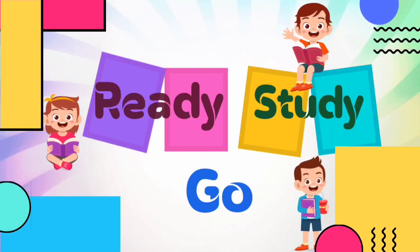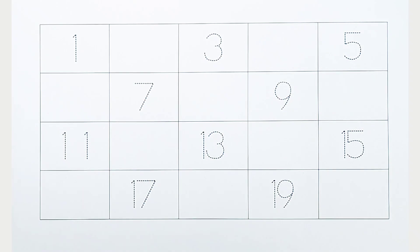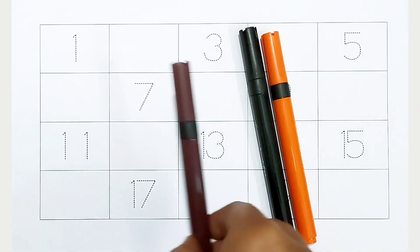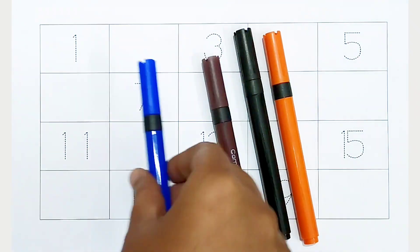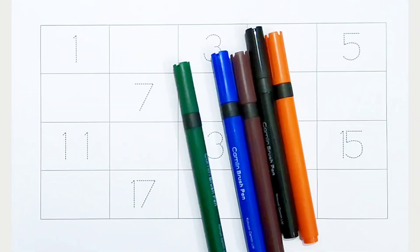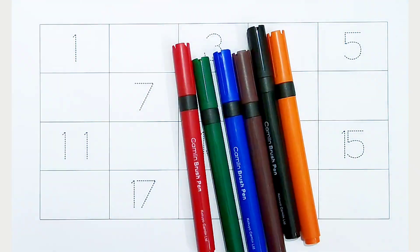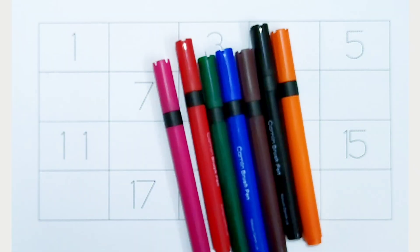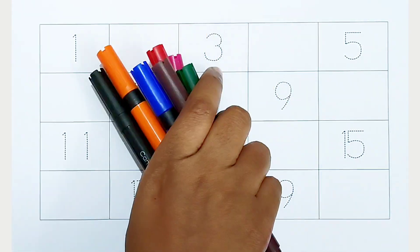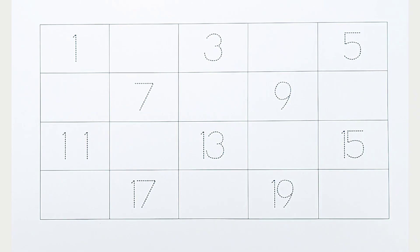Ready, study, go. Orange color, black color, brown color, blue color, green color, red color, pink color, yellow color. Hi kids, today we can learn the numbers from 1 to 20.